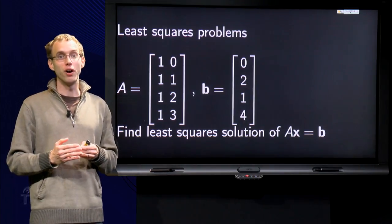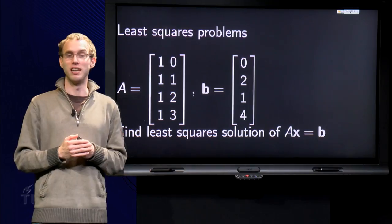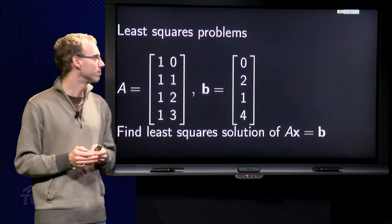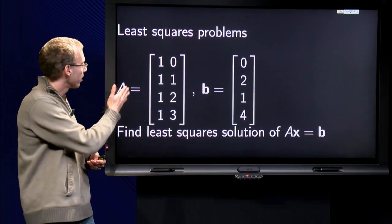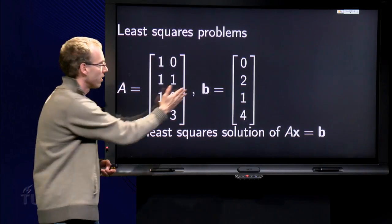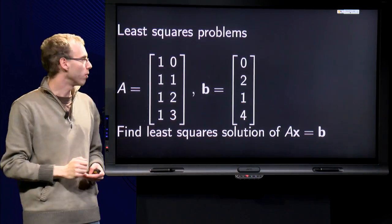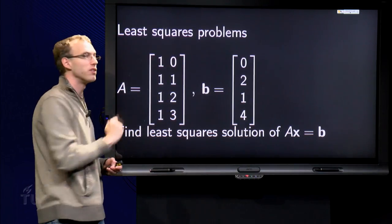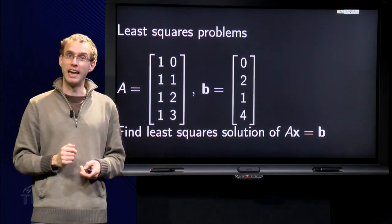In this video we will apply the second method to find our best line through the data points we found earlier. So we had the following problem: a matrix A, a vector b containing the y values of the data points, the columns containing x values of data points, and we wanted to find the least squares solution of Ax equals b.